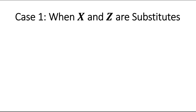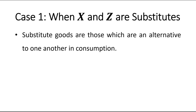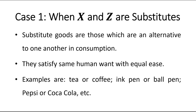Case 1: When x and z are substitutes. Substitute goods are those which are an alternative to one another in consumption. They satisfy the same human want with equal ease. Examples are tea or coffee, ink pen or ball pen, Pepsi or Coca Cola, etc.